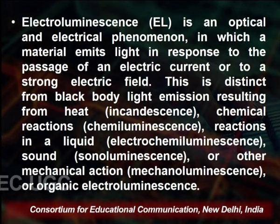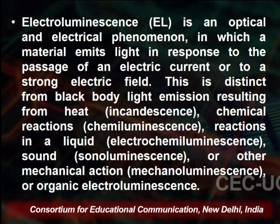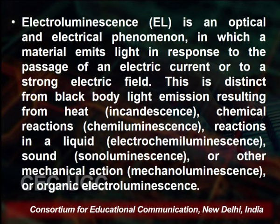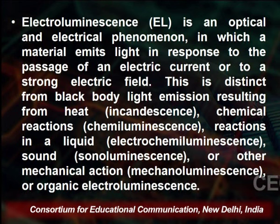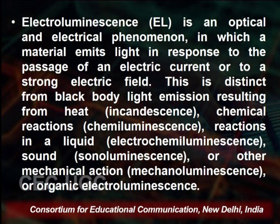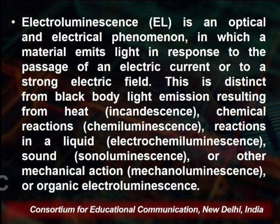Next we discuss electroluminescence, which is one of the display devices. It is an optical and electrical phenomenon used to display the signal. Electroluminescence is an optical and electrical phenomenon in which a material emits light in response to the passage of electric current or a strong electric field. This type of device is used for getting the output through the electronic circuit. It is distinct from black-body light emission resulting from heat, chemical reactions, or mechanical actions.